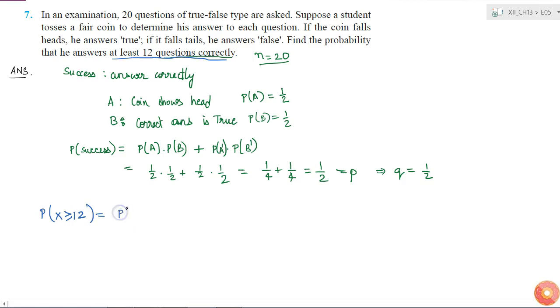So this is equal to probability of X equal to 12 plus probability of X equal to 13 plus probability of X equal to 14 plus probability of X equal to 15 plus probability of X equal to 16 plus probability of X equal to 17 and 18 and 19 and probability of X equal to 20. So I have to sum all these cases.